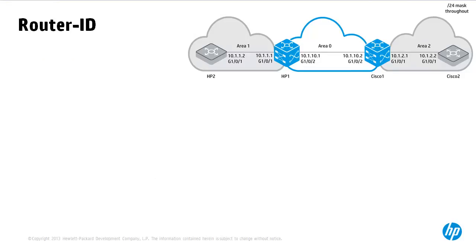In OSPF, each router is uniquely identified by a router ID, so each router or switch in the OSPF domain needs a unique router ID. This is either configured statically — which is the recommended implementation — or automatically chosen from one of the IP addresses configured on that device. In both Comware and Cisco, the highest IP address of any physical interface is used as the router ID if no loopback is configured. When a loopback is configured, the highest IP address on any loopback interface is chosen. In Cisco, secondary IP addresses are ignored, but in Comware, sub-IP addresses are used. The moral of the story is: configure a unique router ID on each device.